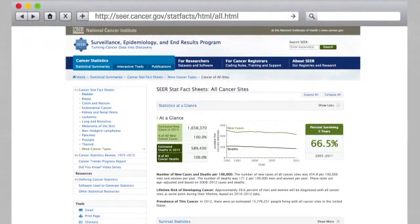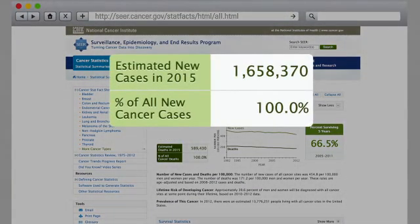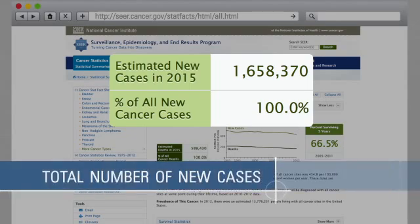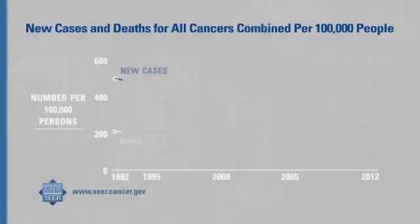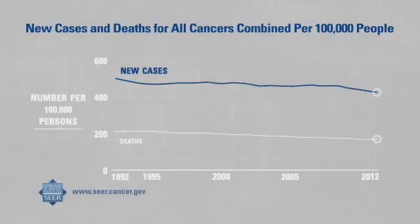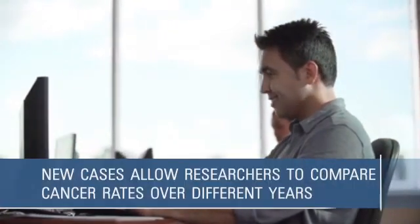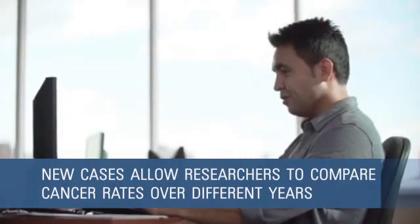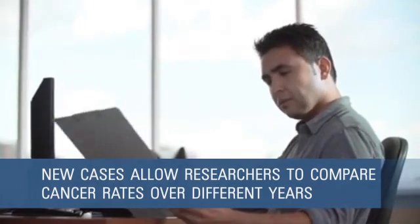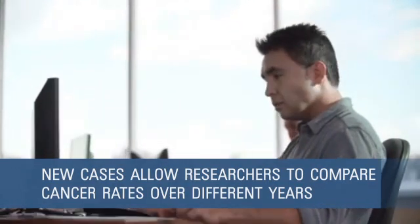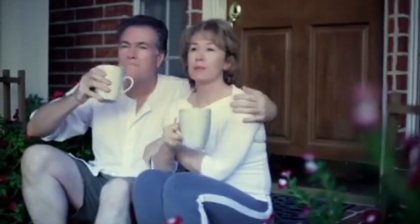You can also see how many people were diagnosed in a specific year as the total number of new cases, or as the number of new cancer cases per 100,000 people. The number of new cases per 100,000 people is called an incidence rate. Looking at this rate allows researchers to compare cancer rates over different years, even as the US population changes.